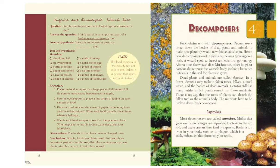Dead plants and animals are called detritus. In a forest, detritus may include fallen trees, leaves, animal waste, and the bodies of dead animals. Detritus still has many nutrients, but plants cannot use these nutrients directly. There is no way that the roots of plants can absorb a fallen tree or an animal's body. The nutrients have to be broken down first by decomposers.